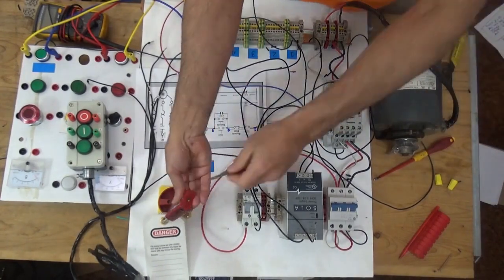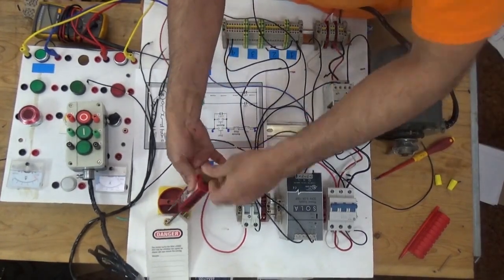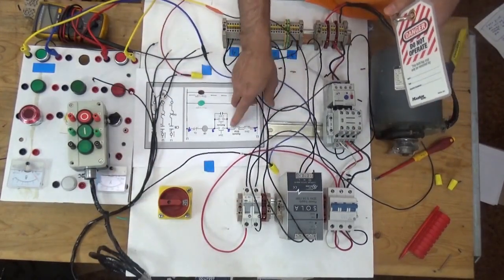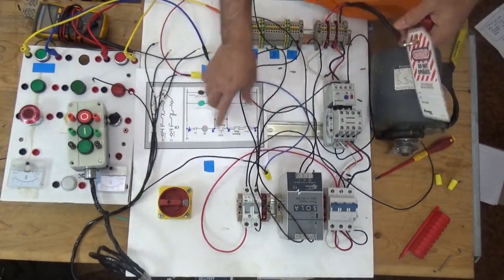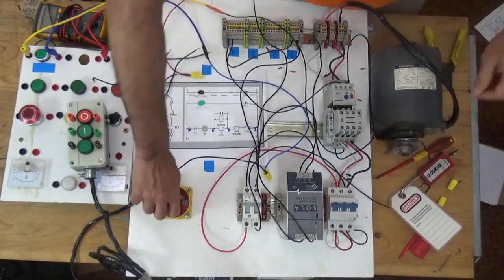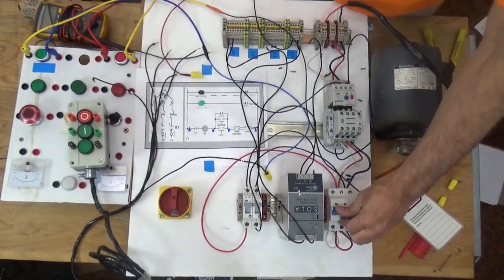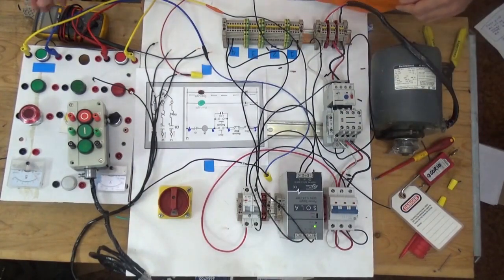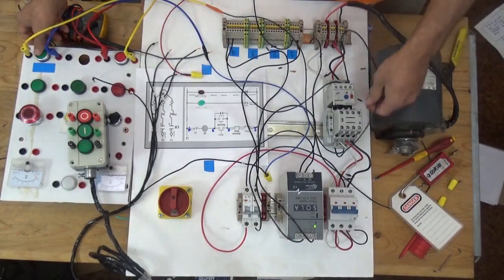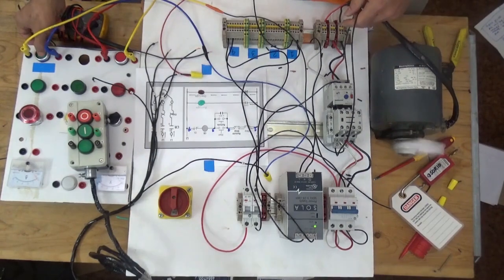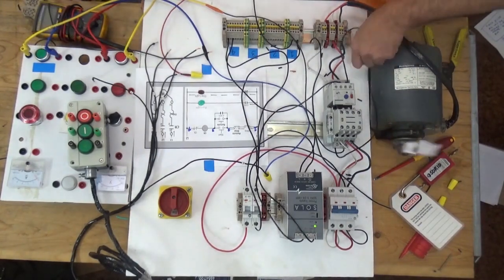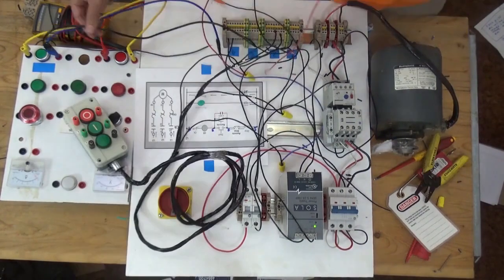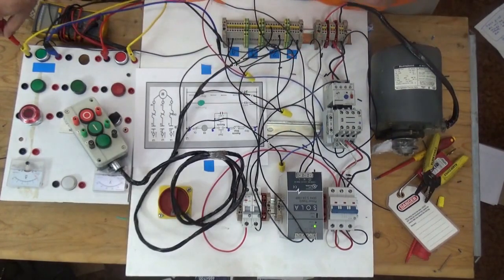Now we're going to try if it works because it's already a complete circuit from line 1 going to line 2 for the first round. Let's try to start if this motor will run. It runs, but we don't have yet the latching circuit and the other start button.